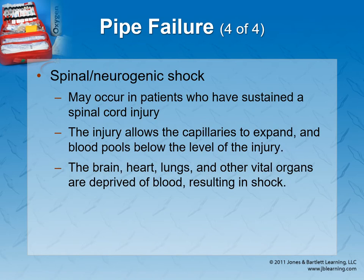Spinal shock and neurogenic shock are kind of the same. At our level and even at the paramedic level, we consider them the same — their treatment is identical pre-hospital. This involves a spinal cord injury from something like a bad car accident or a stabbing to the spine. Our veins and arteries constrict or dilate depending on signals from the spinal cord. If you sever the spinal cord, everything relaxes — the signal telling arteries and veins to stay constricted stops getting through, and all those vessels below the level of injury can expand, causing shock.